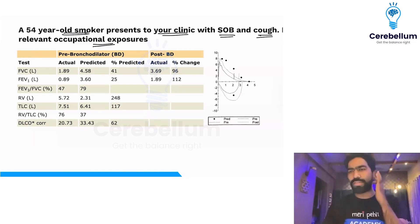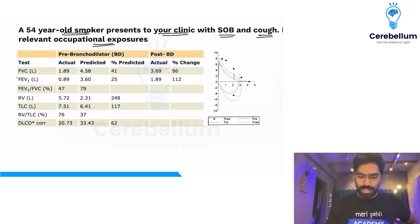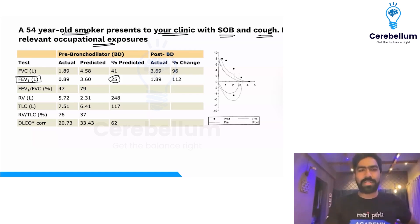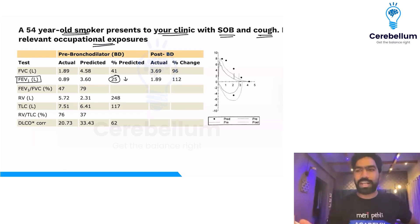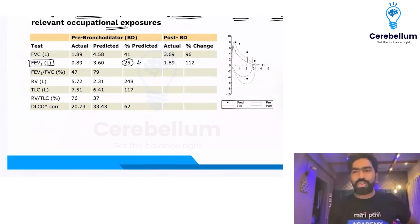Even though stepwise you see FEV1/FVC first, what you will see first is FVC ratio. Always see FEV1 first — check the percentage predicted. If it is less than 80%, you suspect a ventilatory defect — either obstructive or restrictive. We have to evaluate, so now go to the stepwise protocol.